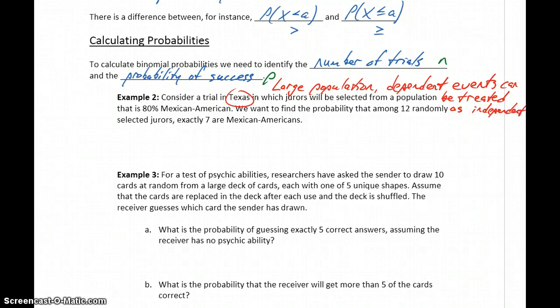So we technically have one condition that we don't meet, but using this idea of large populations lets us get around that idea. So in this case we're selecting 12 jurors, meaning there will be 12 trials. And we're interested in the probability of selecting exactly seven Mexican American jurors. The population is 80% Mexican American, so the probability of success is going to be 0.8. And we want to find the probability that X is exactly equal to seven.